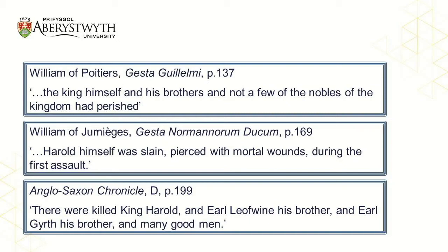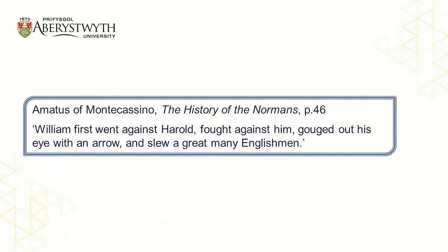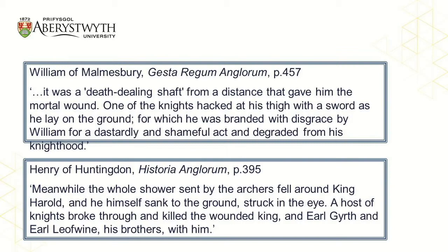The Anglo-Saxon Chronicle simply says that King Harold was killed along with his brothers and many other good men. The earliest surviving source to mention the story that Harold was killed by an arrow in the eye comes from perhaps a slightly surprising place. It is a chronicle written by a monk in the southern Italian abbey of Monte Cassino, and the text was written around 1080. The text notes that William first went against Harold, fought against him, gouged out his eye with an arrow and slew a great many Englishmen. It is not until the 1100s, the beginning of the 12th century, that histories produced in England began to claim that Harold was killed by an arrow in the eye.